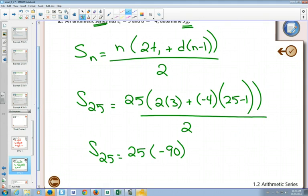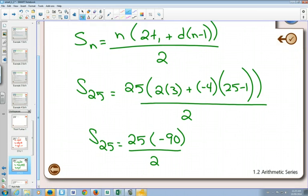Someone check if that's correct. Then we divide by 2. So we have 25 times negative 90, divided by 2. What do we get as an answer? Negative 925.